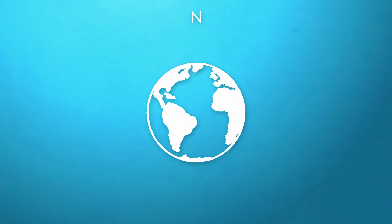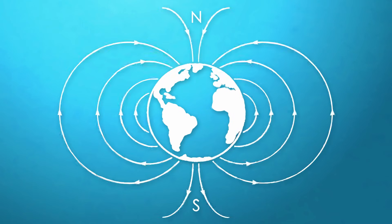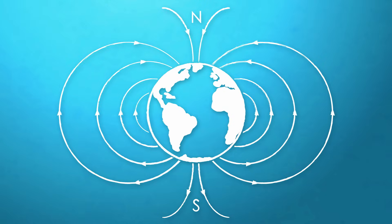North is positive, south is negative, and our planet is wrapped in slopes and curves of magnetic fields arcing in between them.